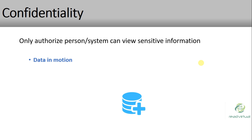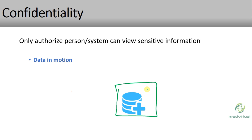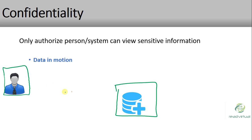We have some servers here — this is our data center. In this data center we may have many servers with various applications. We also have users who want to use applications that are inside the data center. When a user wants to access those applications, they will use some communication channel, which may be a LAN or a WAN.